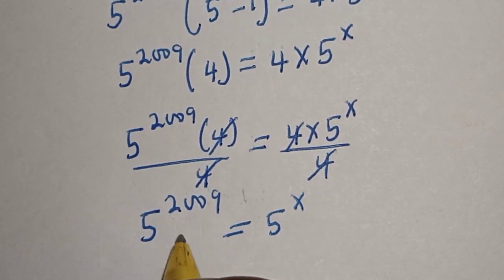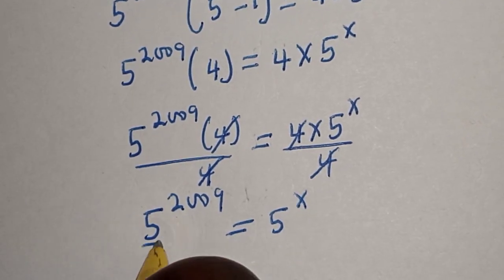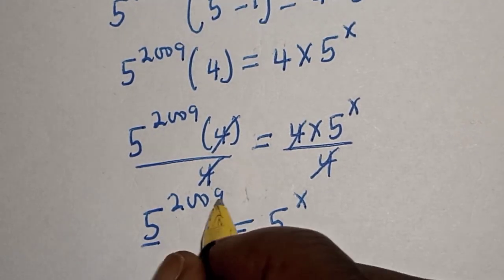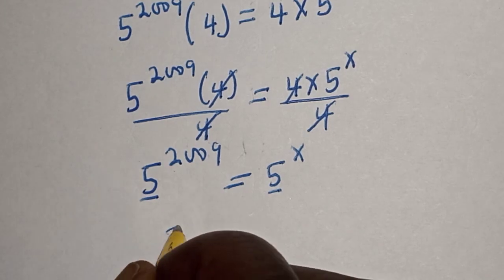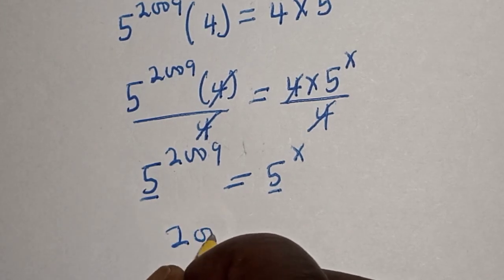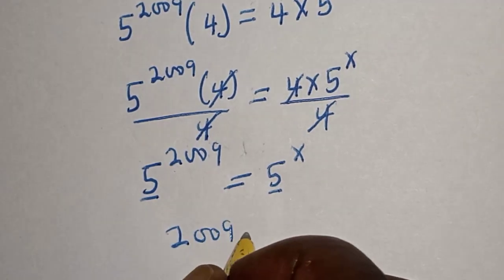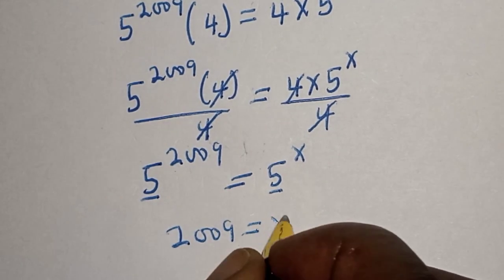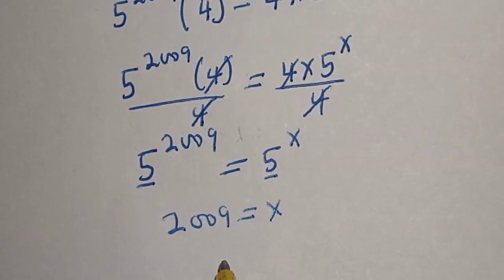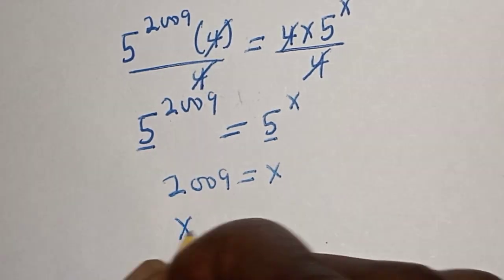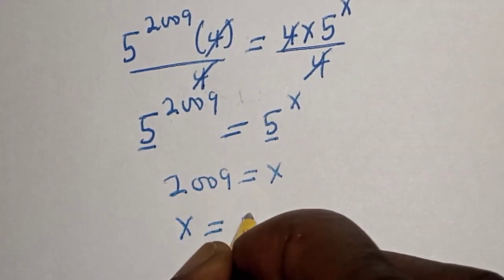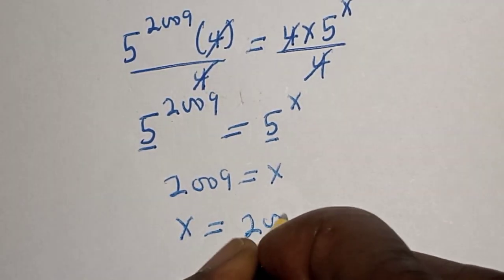As you can see they have the same base, so we deal with the exponents. Therefore 2009 is equal to s, and our final answer is s is equal to 2009.